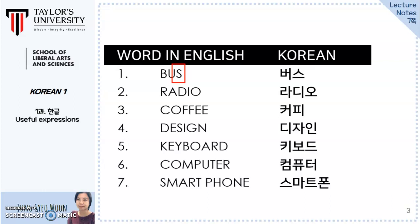Number two: Radio. In Korean, the consonant R does not exist, so it is replaced with the closest sound, which is L. So the Korean word for radio becomes RA-DI-O. For the last syllable O, it must include the circle-like consonant on the top, because each syllable must begin with a consonant.